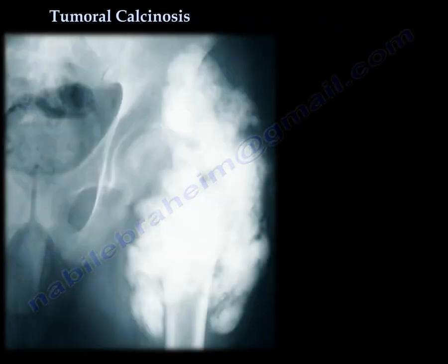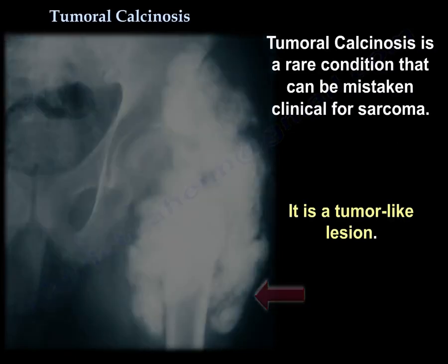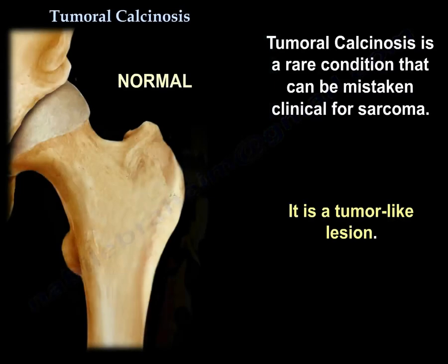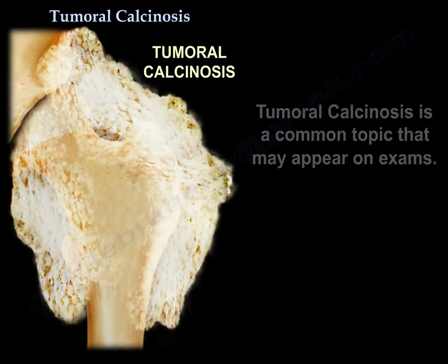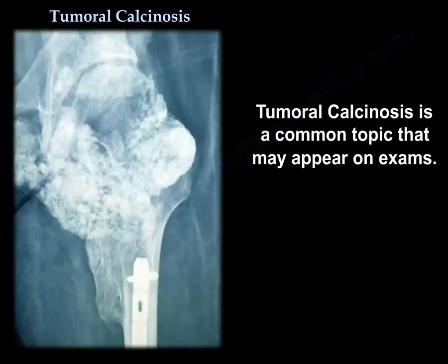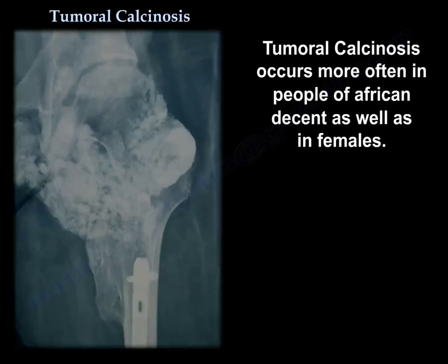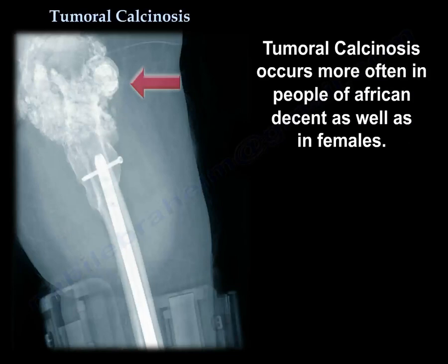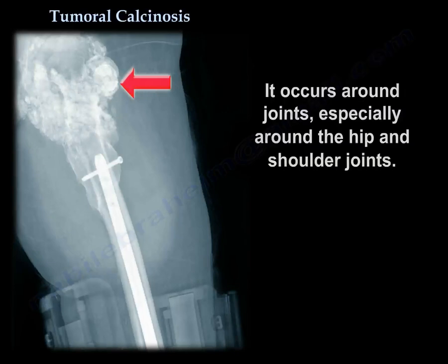Tumoral calcinosis is a rare condition — a tumor-like lesion that can be mistaken clinically for a sarcoma. This is a testable item because it looks like a tumor but is not really a tumor. It is more common in people with African heritage and more common in females. It is a spontaneous periarticular calcification.